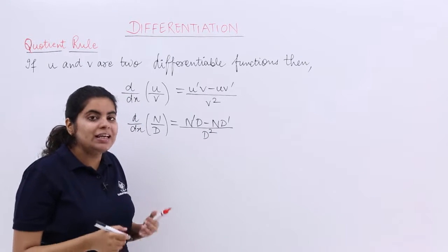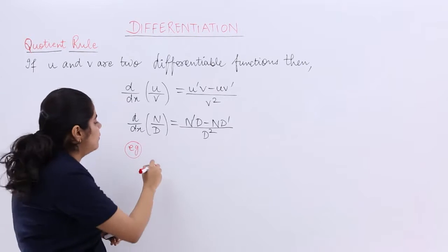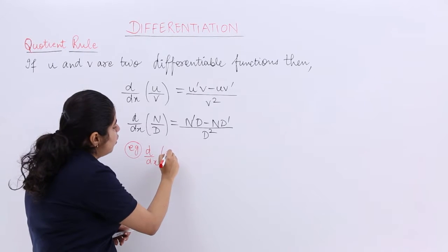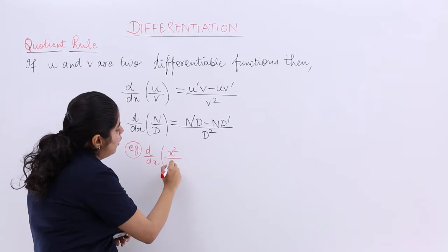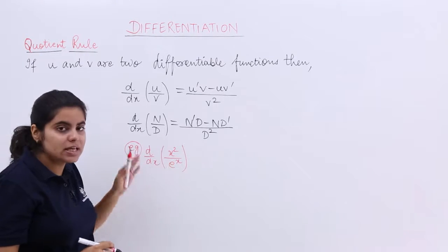Now let's see a numerical problem wherein things become more clear, although you have done it already in your class 11th. d by dx, say I have, of x square upon e raised to the power x. It can be anything. Let me take this example.